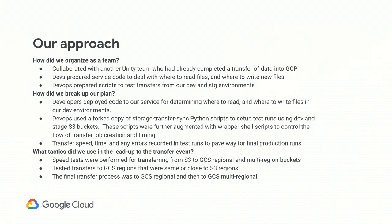In terms of how we organized as a team: another team at Unity had already done a transfer project, slightly less complicated because they had consistent naming conventions. We took some of their wrapper scripts and tailored them to our needs. Our devs did service code prep to handle where to read and write files during the process. DevOps prepared scripts to test transfers from dev and stage environments before the final production run. We measured transfer speed times and logged any errors in test runs to prepare for final production use. We tested speed in both regional and multi-regional buckets — the end bucket was multi-regional.